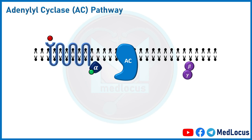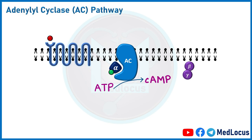In the adenylyl cyclase pathway, adenylyl cyclase (AC) is a membrane-bound protein activated by Gs (stimulatory) proteins and inhibited by Gi (inhibitory) proteins. When activated, the AC enzyme catalyzes the conversion of ATP to cAMP, or cyclic AMP. cAMP is called a second messenger.